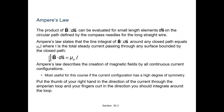Ampere's Law: the product of B·ds can be evaluated for small length element ds on the circular path for the long straight wire. Ampere's Law states that the line integral of B·ds around any closed path equals μ0·I, where I is the total steady current passing through any surface bounded by the closed path.